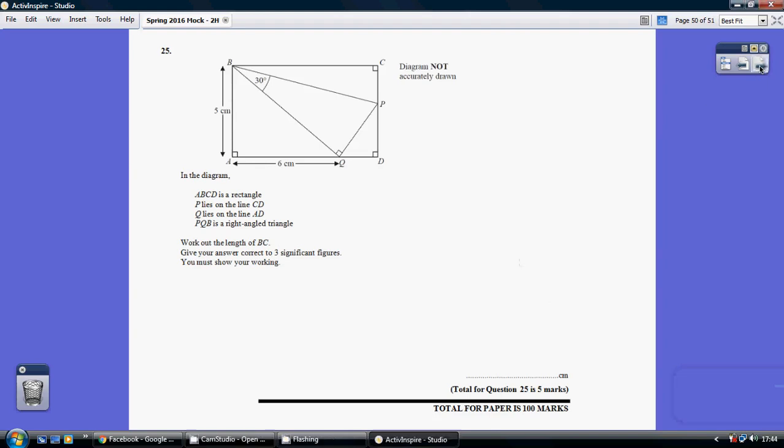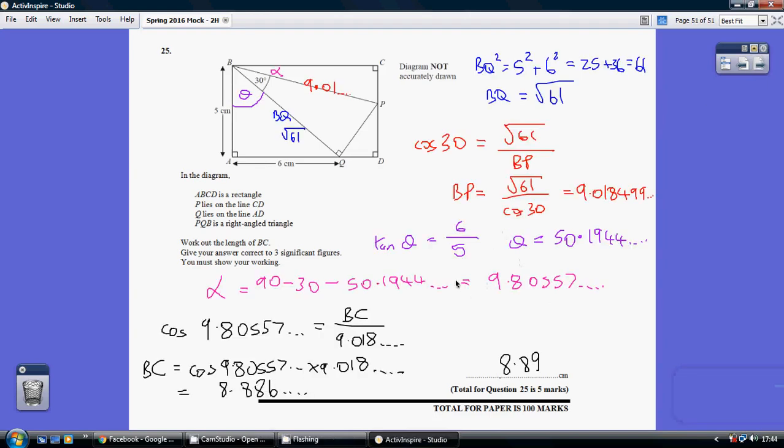Question 25. Fairly long-winded but not impossible. So our goal is to end up by working out what BC is, that length there. So this is the way I did it. There may be other ways.